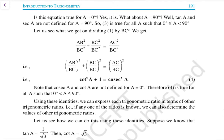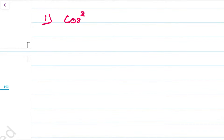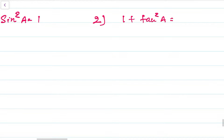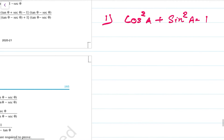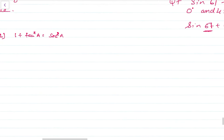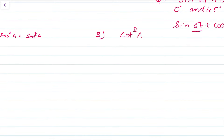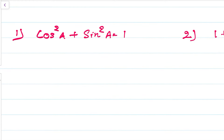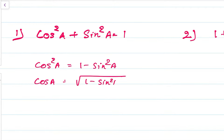Based on these three main identities — cos²A + sin²A = 1, 1 + tan²A = sec²A, and cot²A + 1 = cosec²A — we can derive further identities. For example, cos²A = 1 − sin²A, and cos A = √(1 − sin²A).